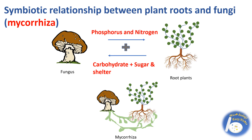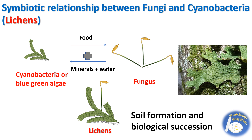Fungi also have a symbiotic relationship with cyanobacteria; together they are called lichens. The fungal part belongs to the species of Ascomycetes and Basidiomycetes. Cyanobacteria do photosynthesis, produce food, and provide it to the fungus, while the fungus provides minerals and water to the cyanobacteria. Lichens help in soil formation and contribute to changes in the species structure of an ecological community over time, which is called biological succession.